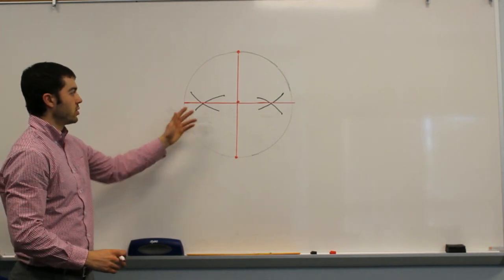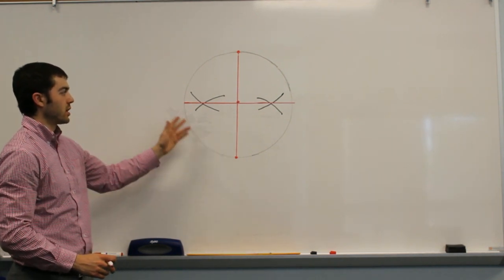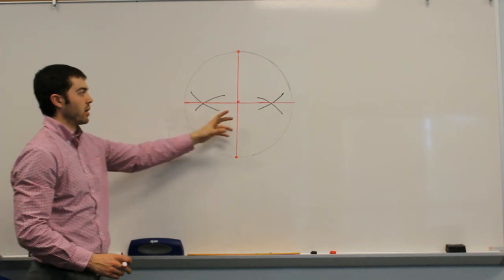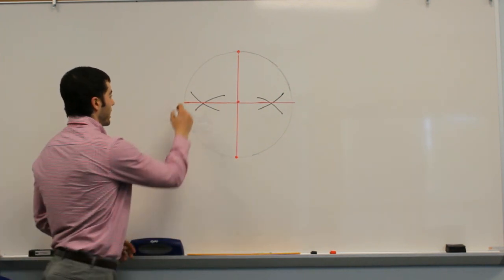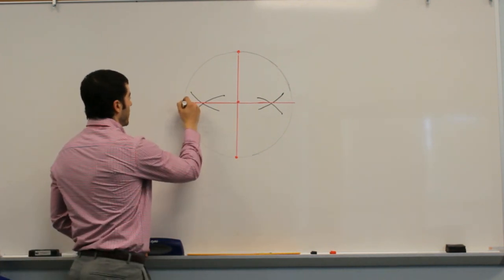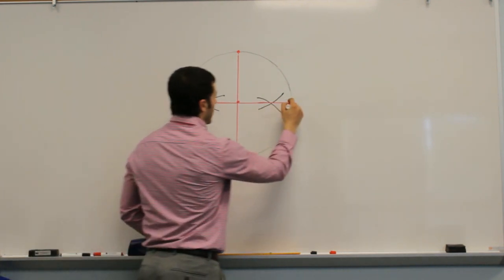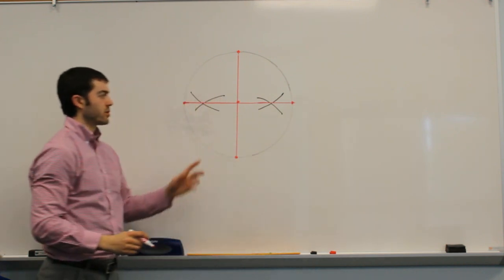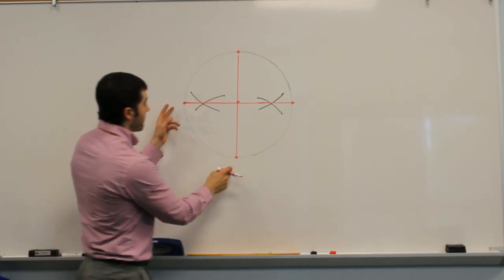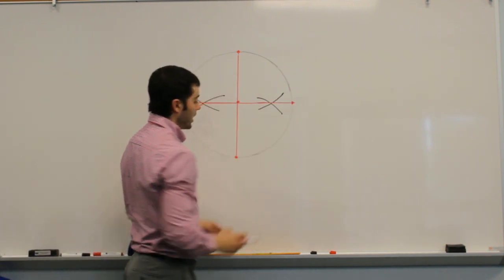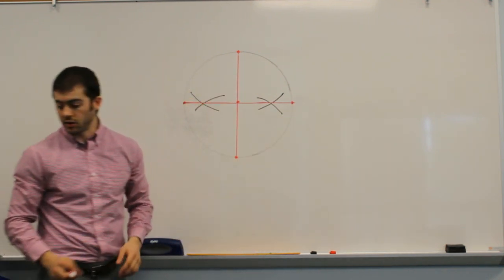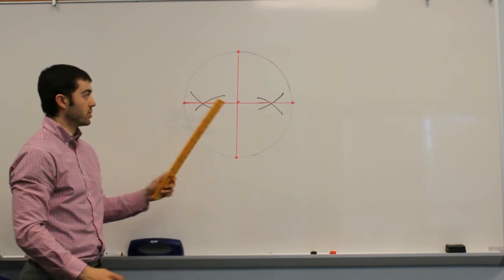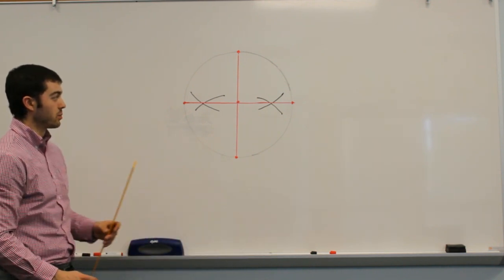So now we have two diameters in our circle. We have four points on the circumference of the circle, and maybe you can see where we're going here. From here, all we have to do is connect those points.